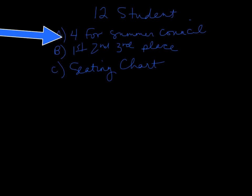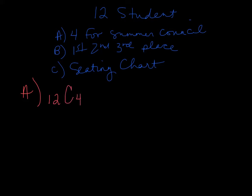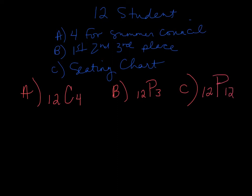Just to remind you of the formulas we used: for part A, it was a combination — we had 12 people to choose from and we were picking four, so that's 12C4. For part B, there are 12 students to choose from, it was a permutation, and we were picking three people. Part C was a permutation because order mattered, and we were using all 12 people.